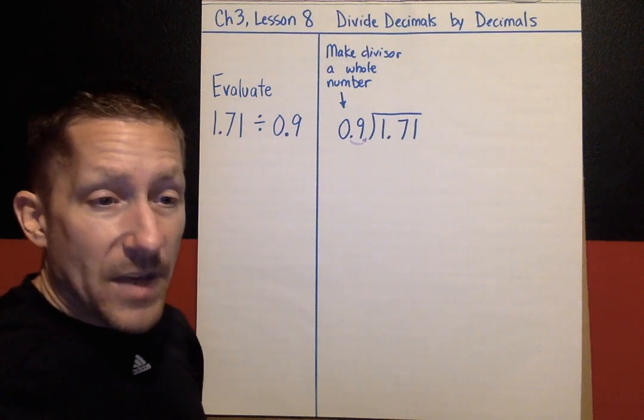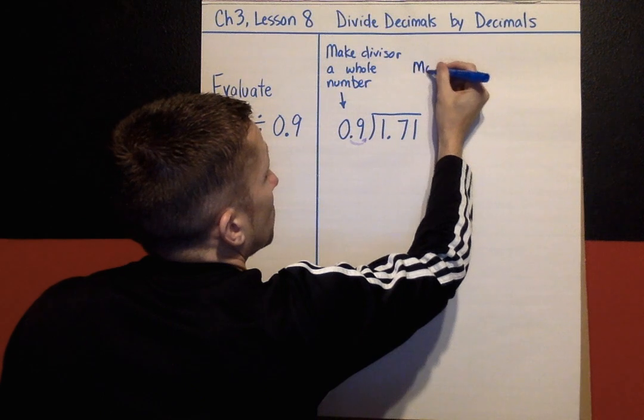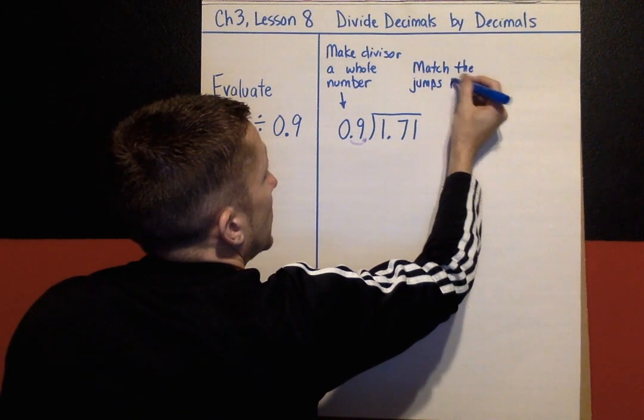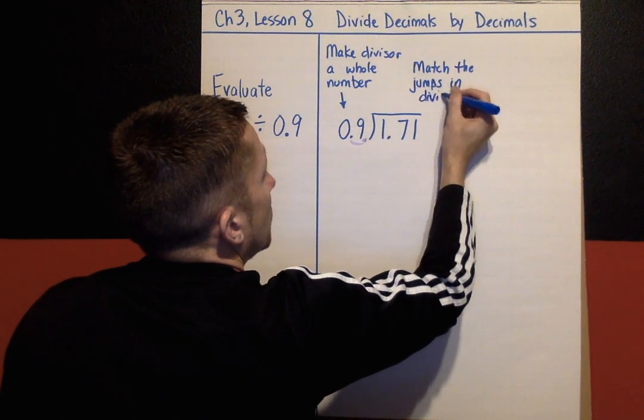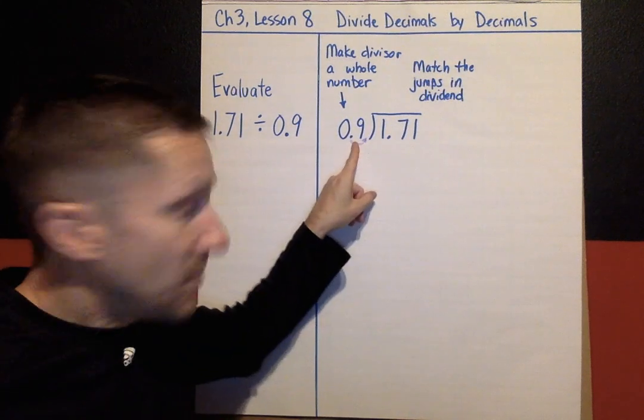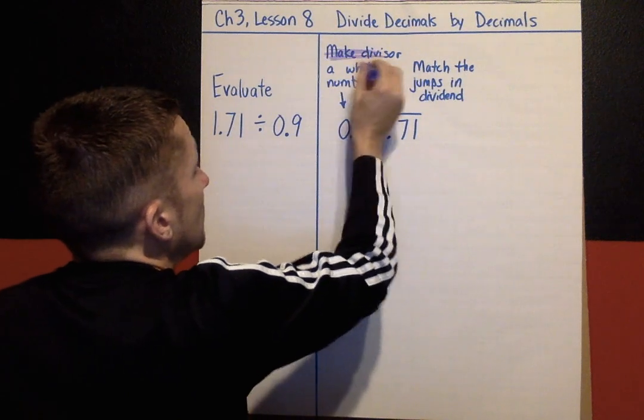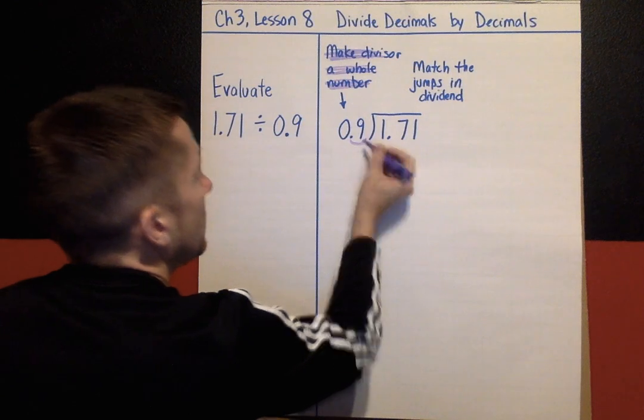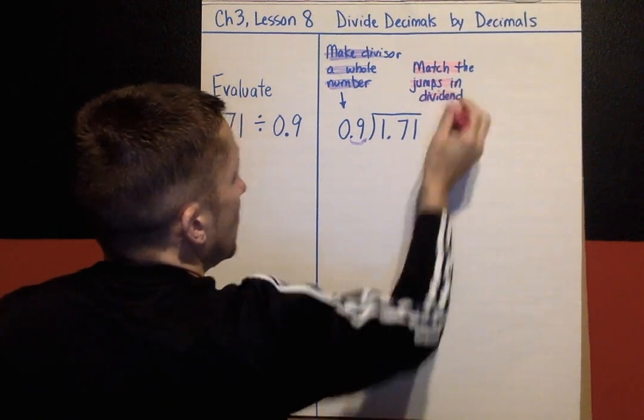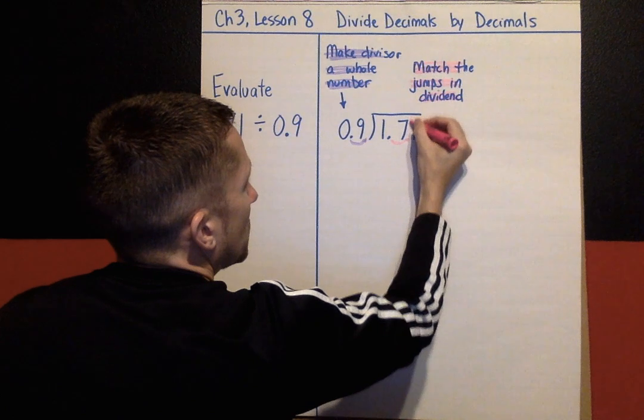Well, if we do that, we have to match the same number of jumps in the dividend. So I'm going to write that down: Match the jumps in the dividend. So again, this is the divisor. We needed one jump to make it a whole number 9. We have to match the jumps in the dividend. So this took one jump to make it a whole number 9. Now we need to match the jumps in the dividend. One jump to the right, one jump to the right, and then the decimal goes straight up from there.